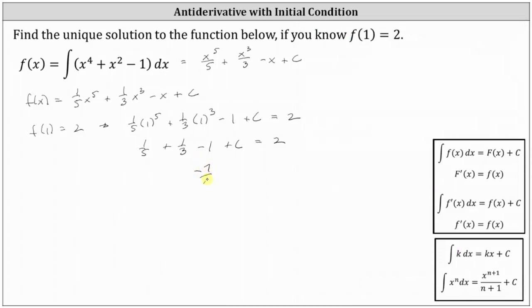This gives us negative seven fifteenths plus c equals two. The last step to solve for c is to add seven fifteenths to both sides, which gives us c equals two or two over one plus seven fifteenths.